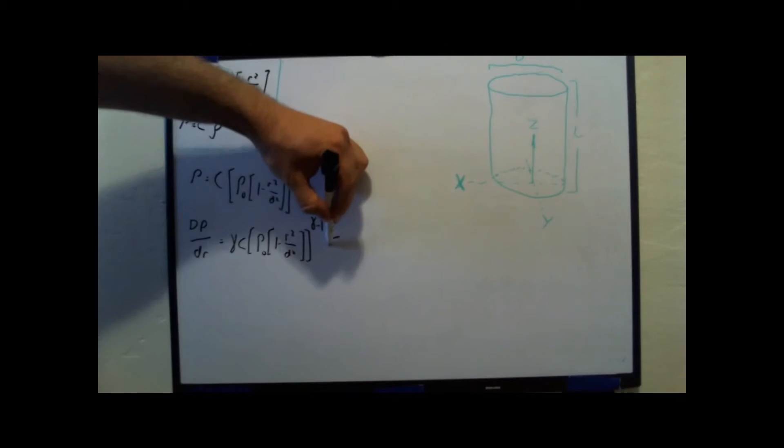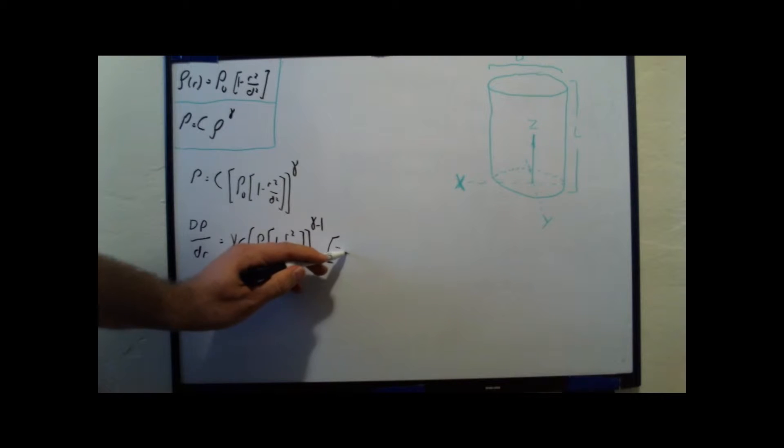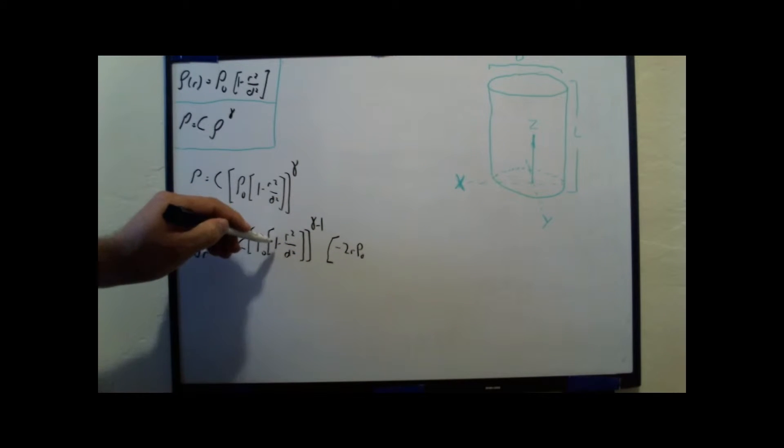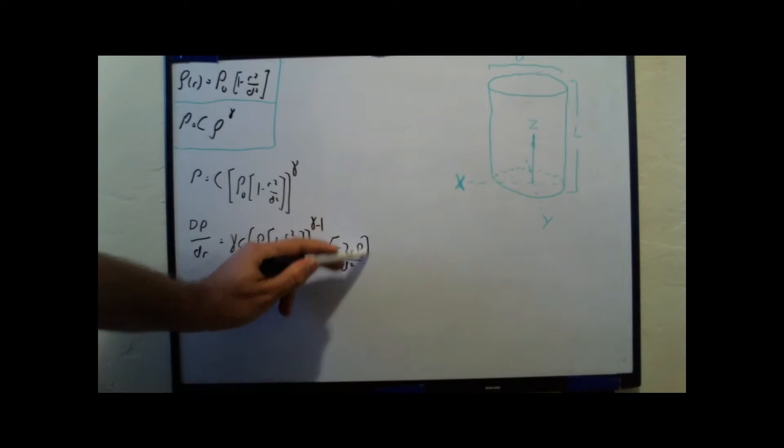And then I can do the chain rule for the inside, and that simplifies to times... And notice this one goes to zero. I'm going to have negative 2r times rho naught because the rho naught is distributed. And when I distribute the rho naught to the 1, that goes to zero divided by d squared.